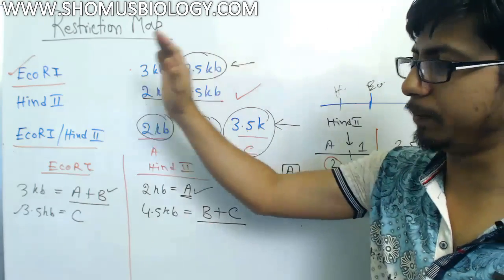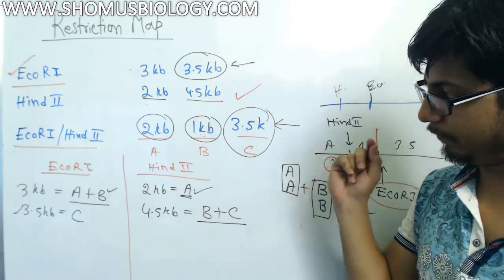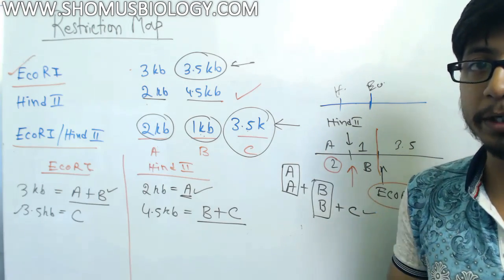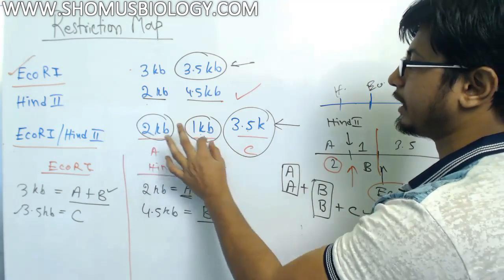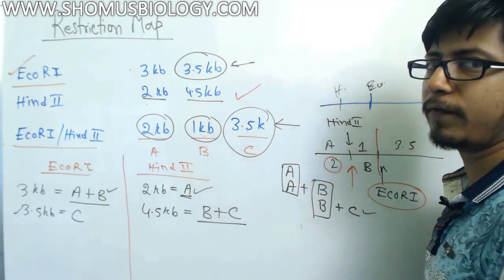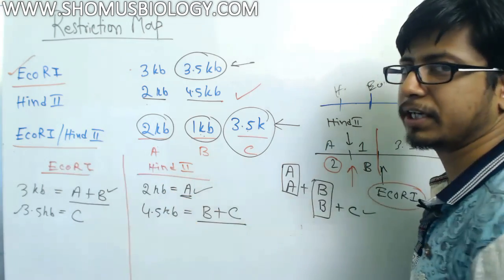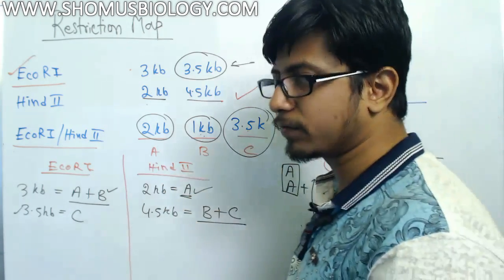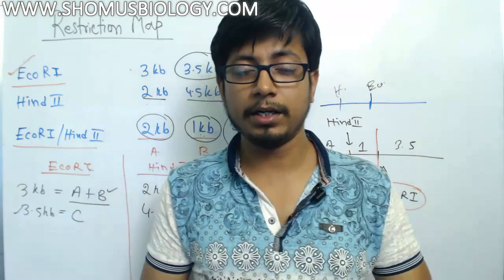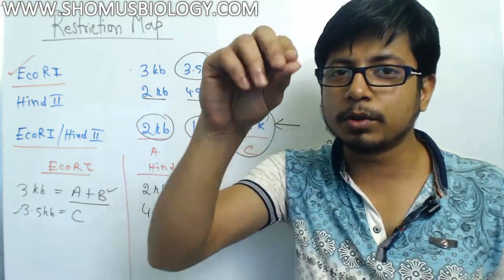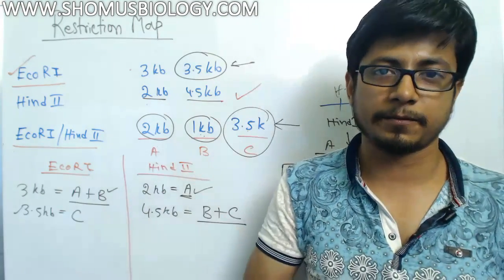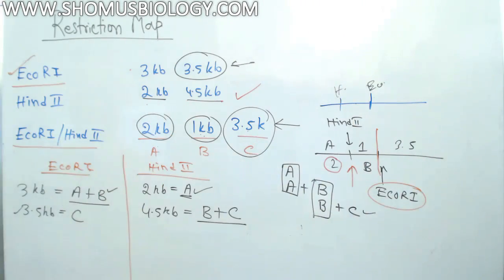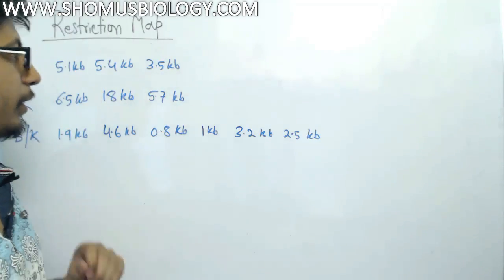The reason I'm emphasizing this rule is that you'll see in the next question — if you try the simple common method it fails, but if you use this method it's fast and easy. In this first question there were only three fragments from two restriction enzymes, but they may give you 6, 7, 8, or 9 different fragments, and it becomes very difficult to place them without a systematic approach.